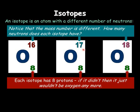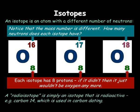This isotope of oxygen has a mass of 17, which means it must have nine neutrons, because it's got eight protons — so nine plus eight gives a mass of 17. And this one finally would have 10 neutrons, so 10 and eight protons add up to a mass of 18.